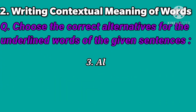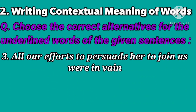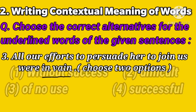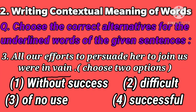Let's see the third sentence: 'All our efforts to persuade her to join us were in vain.' The underlined word is 'in vain.' Looking at the context, the meaning can be guessed from the surrounding words. The phrase suggests no success was achieved.